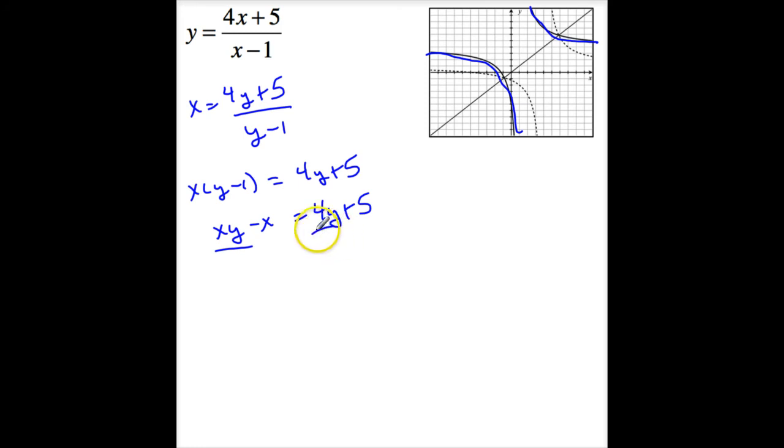So this is, let's see, (x minus 4) times y is equal to 5 plus x. So y is x plus 5, I just like my x's first, x minus 4.